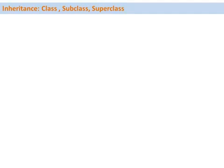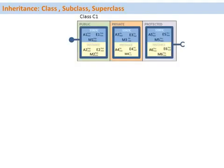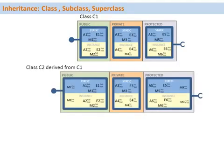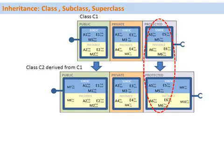Let's have a look at how inheritance works. Say for example we have a class C1 and another class C2 which we derive from class C1. Then class C2 inherits all the components of the public and protected sections of class C1. This is called inheritance. Class C1 in this case is the superclass and class C2 is called the subclass of class C1. All the components — attributes, methods, and events — are inherited from the protected and public sections.